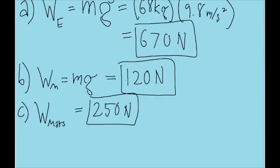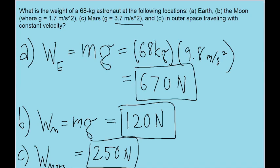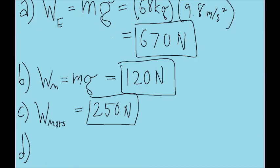And lastly, for part D, we're asked about the astronaut just being in space and experiencing a constant velocity. Now, what that means, constant velocity, is that the astronaut isn't feeling any kind of net acceleration.